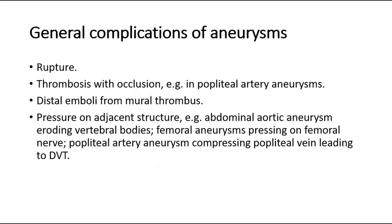The general complications of aneurysms include rupture, thrombosis with occlusion such as in popliteal artery aneurysms, distal emboli from mural thrombus, and pressure on adjacent structures — such as abdominal aortic aneurysm eroding vertebral bodies, femoral aneurysms pressing on the femoral nerve, and popliteal artery aneurysm compressing the popliteal vein leading to DVT. Thank you.